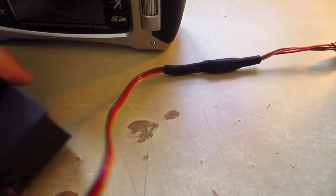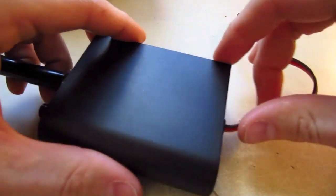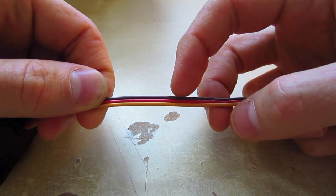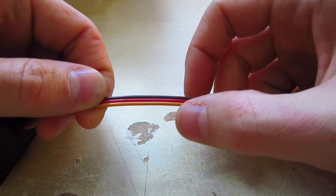So coming out of your Dragonlink here, you have three wires. You have the black one which is negative, the middle one red which is positive, and this bottom yellow orange one is carrying your PPM.